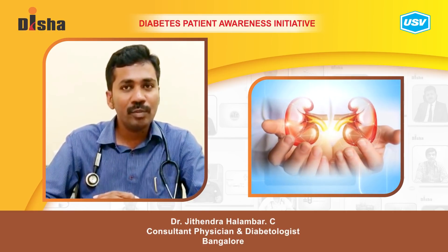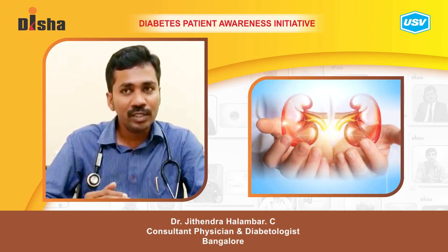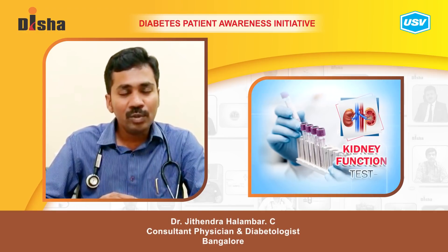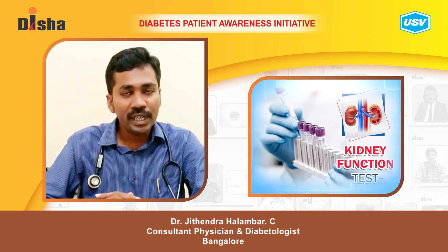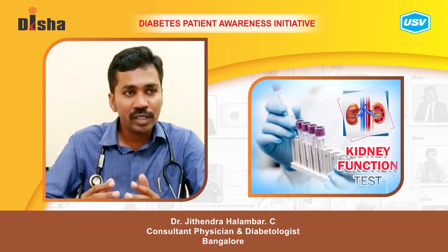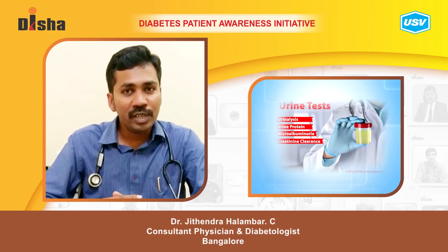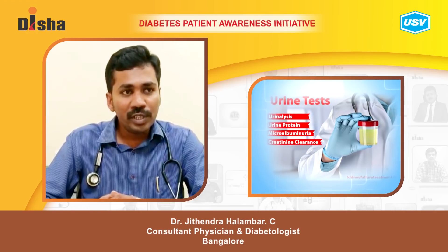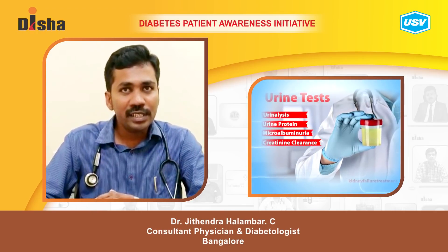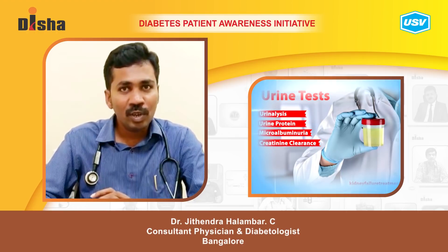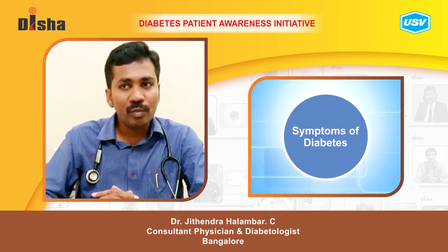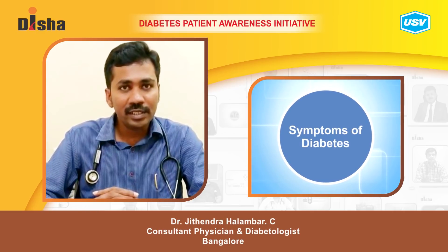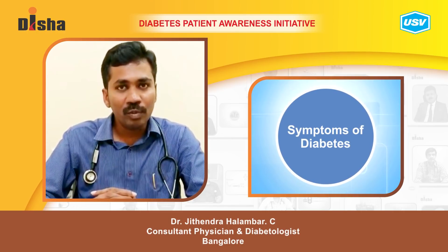In the initial stages, patients usually do not present with any symptoms. During regular annual health checkups, we check serum creatinine values and urine protein levels. If urine protein or serum creatinine levels are rising, this indirectly suggests the patient is developing complications. Other symptoms include early morning facial puffiness, swelling of the lower limbs, and easy tiredness.